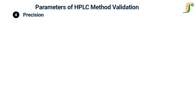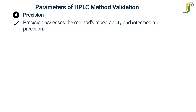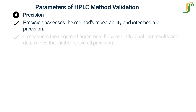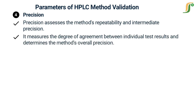The fourth parameter is precision. Precision assesses the method's repeatability and intermediate precision. It measures the degree of agreement between individual test results and determines the method's overall precision.